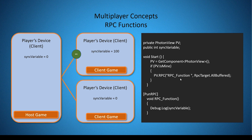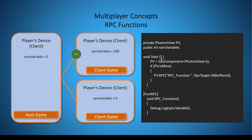The next step is to create the actual RPC function. An RPC function looks like any other function — the only difference is that it has the [PunRPC] tag in front of it. After this tag you specify the return type, and for an RPC you only need void. You then give your function a name; in this case I've called mine RPC_function. In the Photon plugin it's not actually required to have 'RPC' as part of your function name — it's just something I do out of habit to better keep track of which functions are RPCs. Within this function we are printing to the console our sync variable, which is of type int.